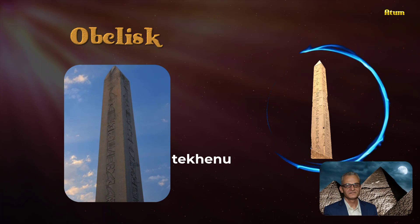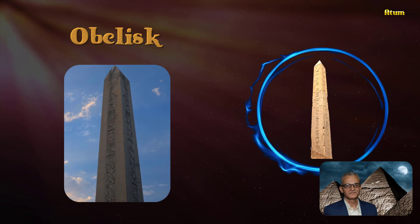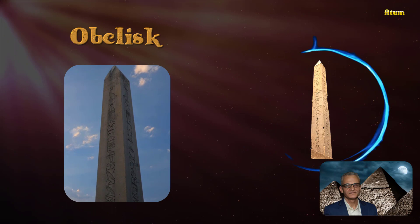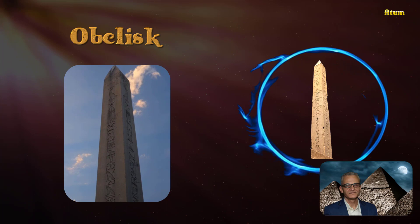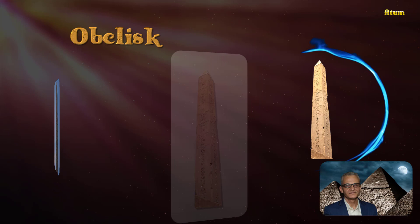Originally, they were called Tekenu by the builders, the ancient Egyptians. The Egyptians would embellish all four sides of the obelisk shaft with hieroglyphs that included religious dedications, most commonly for the sun god Ra, as well as tributes to the rulers.